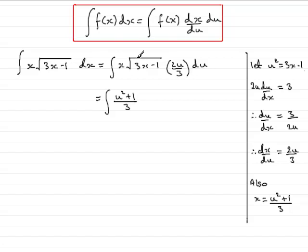So I can replace the x then with u squared plus 1 over 3. And then for the root of 3x minus 1, that's going to be the square root of u squared. Now because we picked u squared as our substitution, square rooting it is just going to simply be a u. And then we have the 2u over 3 on the end here and the du.